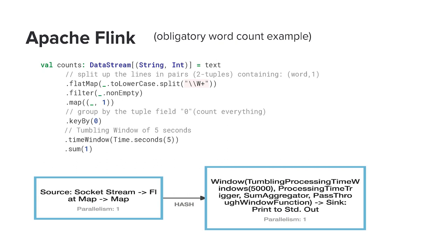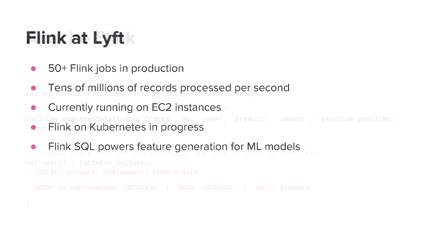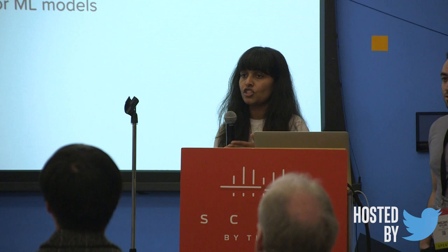Here is a simple word count example for Flink in Scala. It's streaming in text and counting the number of words over a window of five seconds. Flink also supports specifying computation or aggregation in terms of SQL. In this example, a data stream is being read as a table and the aggregation is specified in terms of a SQL query. A lot of programs at Lyft use this Flink SQL. Right now we have more than 50 Flink jobs running in production, processing tens of millions of records per second. It's currently deployed on our EC2 instances using our custom tooling, and we have also been working on getting Flink on Kubernetes. Most of our feature generation for ML models is powered by Flink SQL.